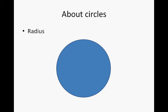The radius of a circle is the distance between the centre of a circle to its circumference. These are all radii and they are all exactly equal in length.